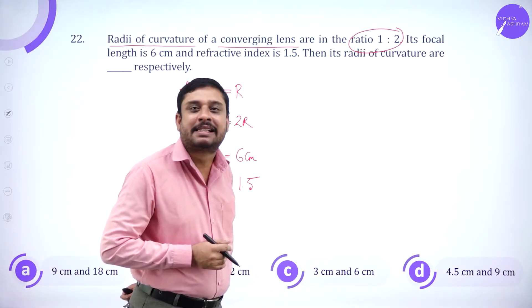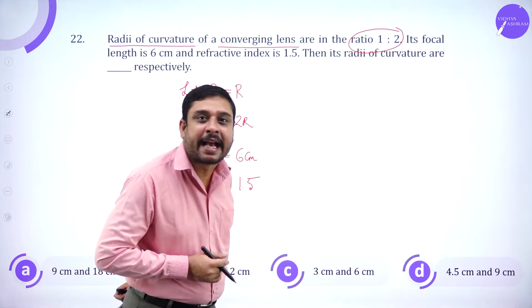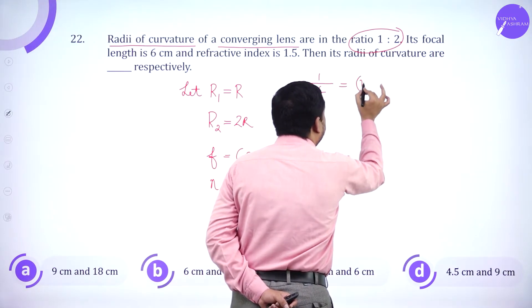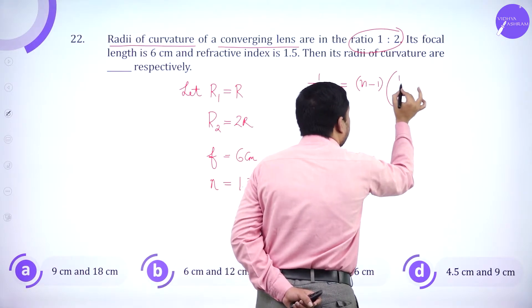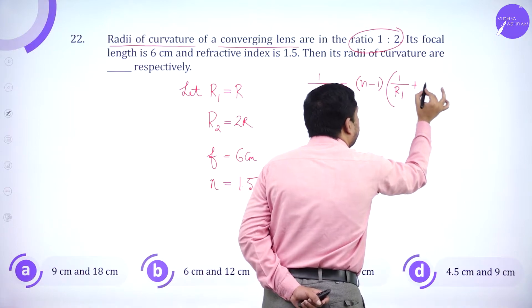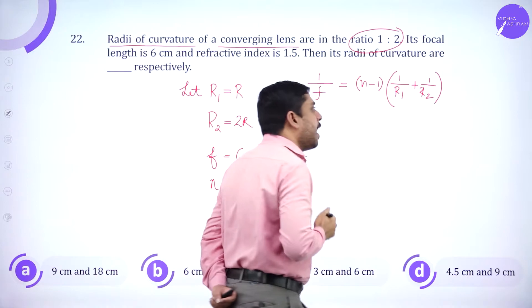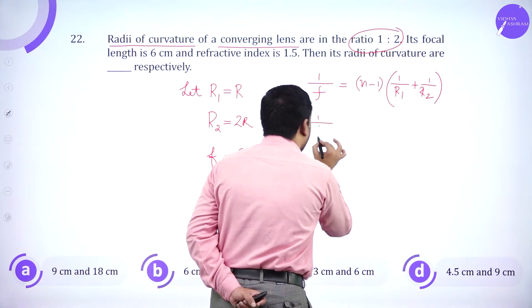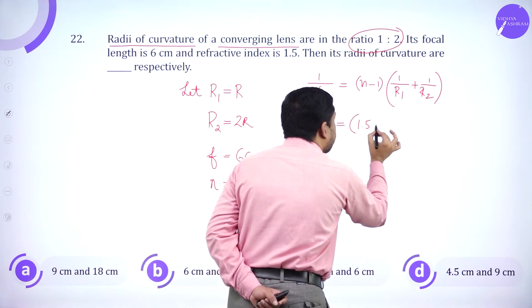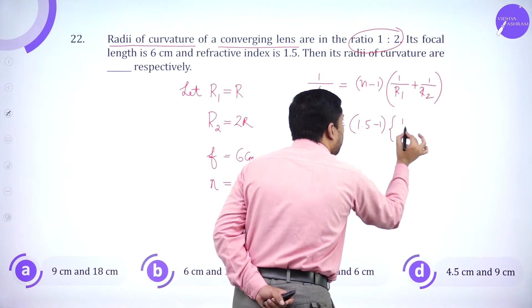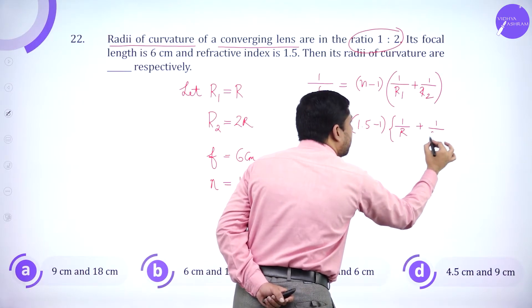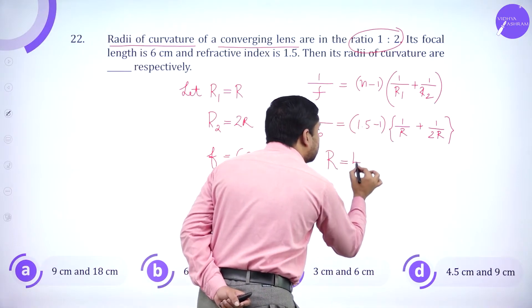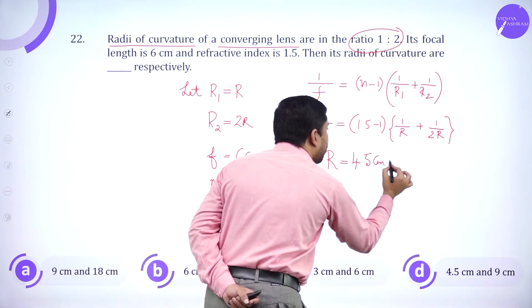I use our most reliable lens makers formula, which says 1 by F is mu minus 1, 1 by R1 plus 1 by R2. So when I simplify, R turns out to be 4.5 centimeter.